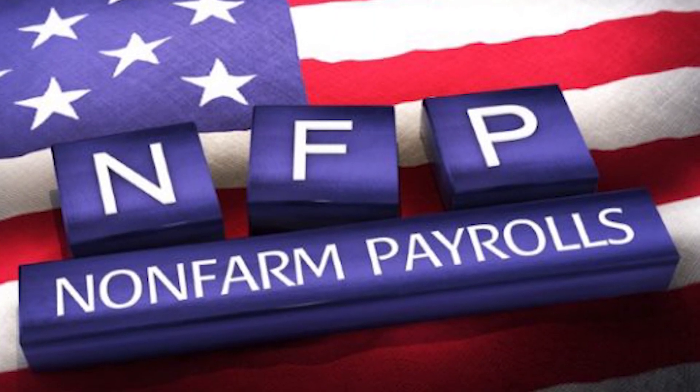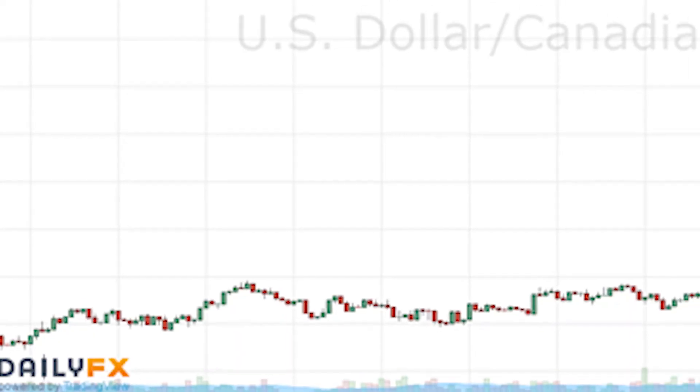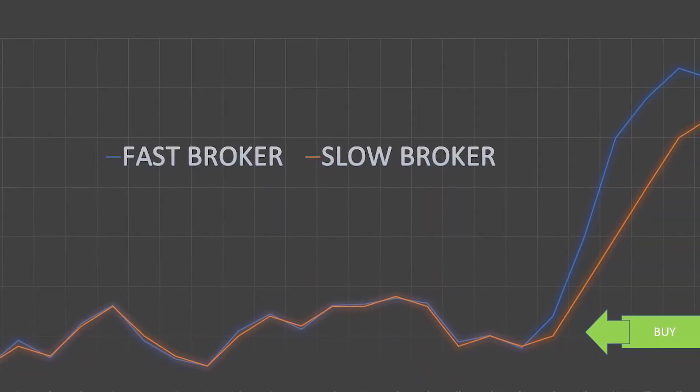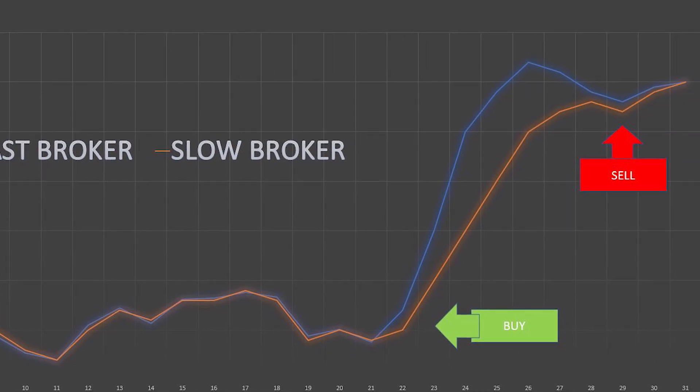We will be getting prices constantly from those two brokers, and when a major news event happens — like non-farm payrolls — we will get a big spike and high volatility on the market. During this event, the fast broker will receive price updates faster than the slow broker, so when we see the big spike on the fast broker, we will make a trade in that direction on the slow broker.